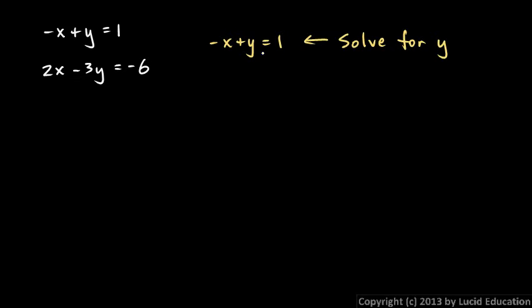You can see that's pretty easy to do. All we do is add x to each side, so if I add x there and there, that cancels out, and I'm left with y equals x plus 1. So I solved this for y.